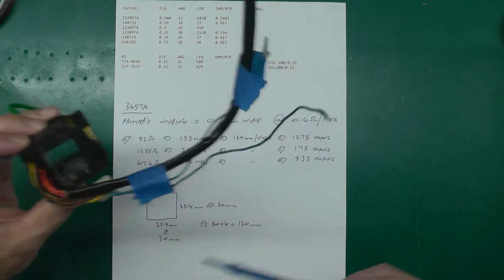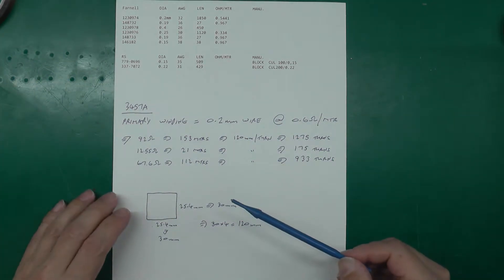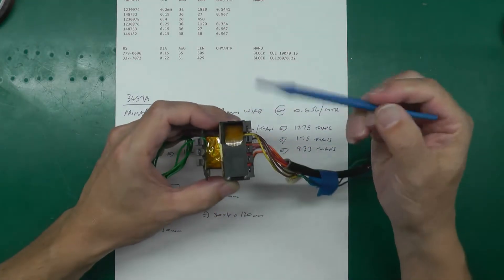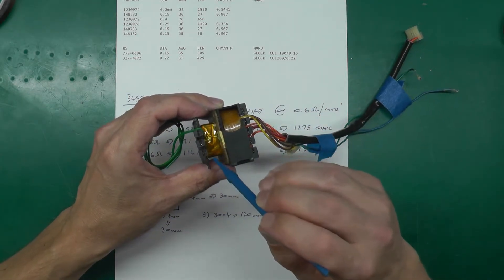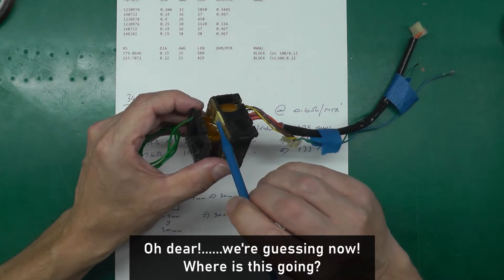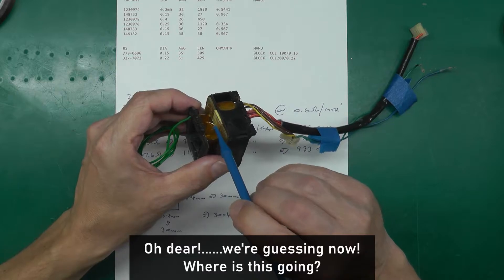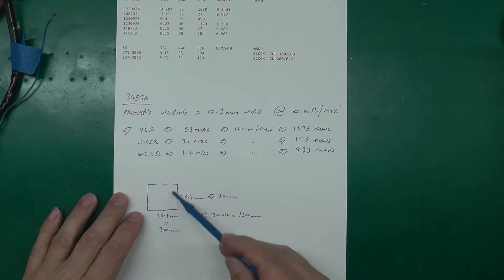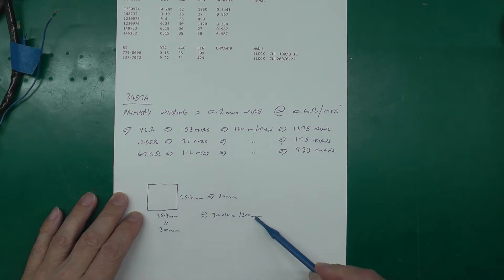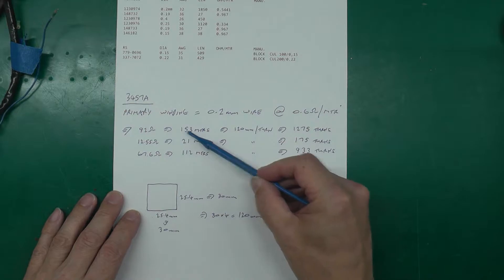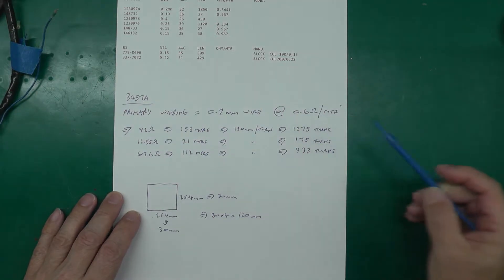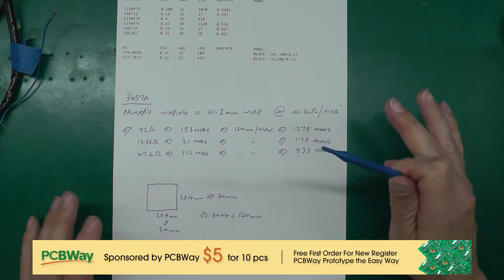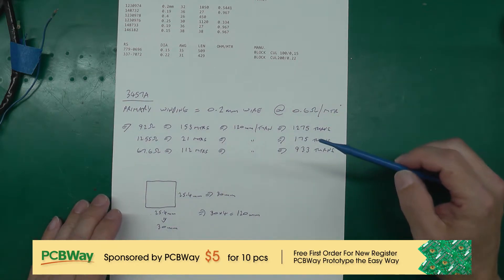Now given that the bobbin is 25.4, it's exactly one inch square, I know the length of one turn. So I've actually not used the 25.4 millimeter figure, I've actually used a 30 millimeter figure. The reason for that is not every single turn is at the base 25.4, it's going to build up quite high, actually maybe 8 millimeters something like that. So I've split the difference roughly and I've chosen 30 millimeters instead of 25.4. That gives me a length per turn on an average of 120 millimeters. Now if we divide that into the 153 and 21 and 112, that works out at 1275 turns, 175 turns and 933 turns.